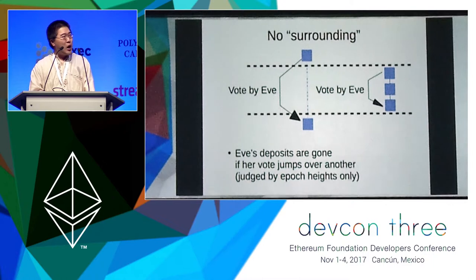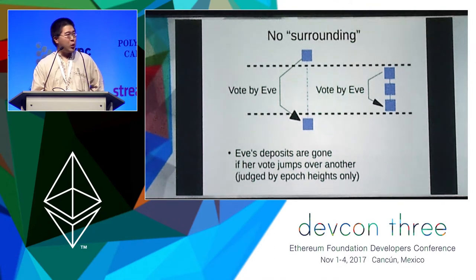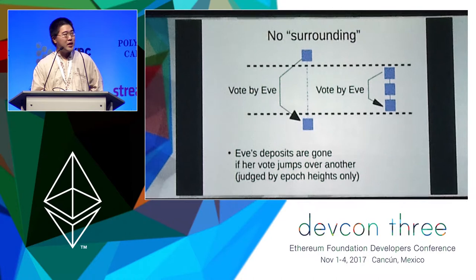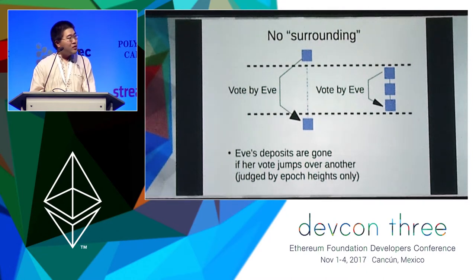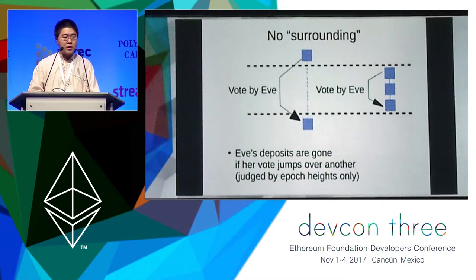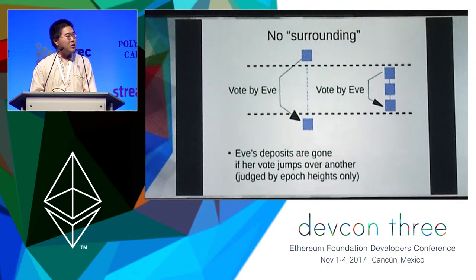Maybe an even more unintuitive rule is the no-surrounding rule. When you vote for the newest block citing the oldest block, and then sign another voting message about something in the middle — measured by the larger or smaller epoch — your deposits are also gone. An intuitive explanation is that your knowledge should get better and better as you learn about cited source blocks; if after learning newer sources your estimate is suddenly shorter, that's not good.